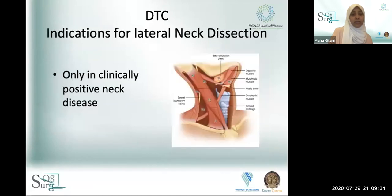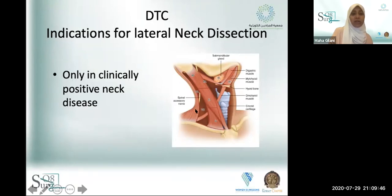For lateral neck dissection — levels two through five — these are done only in clinically positive neck disease. If ultrasound shows suspicious lymph nodes and FNA comes back positive, you proceed with neck dissection along with total thyroidectomy, doing a level two through six dissection on the ipsilateral side.